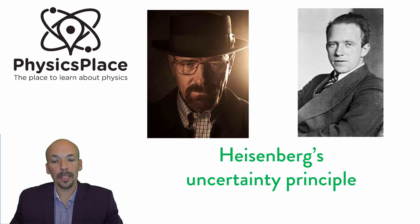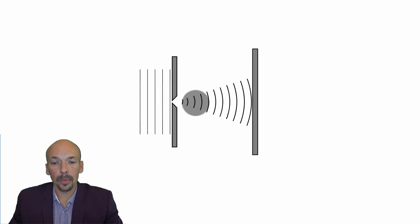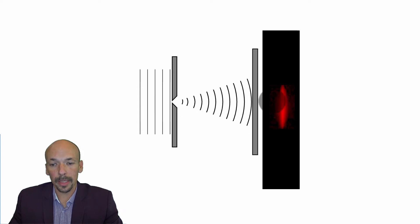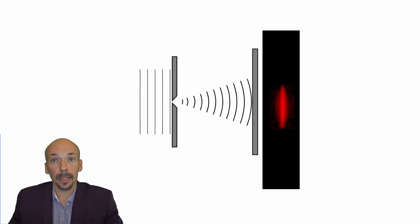Before we go to Heisenberg's uncertainty principle, I will first show you this experiment. We have a screen with a small opening and we have a light source coming in there. You will get diffraction and you will see that the spot of light will be a lot wider than the opening. That is something which has also to do with Heisenberg.